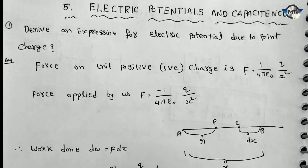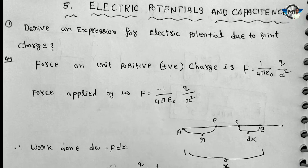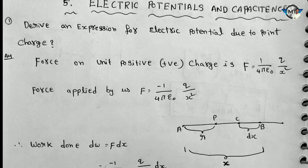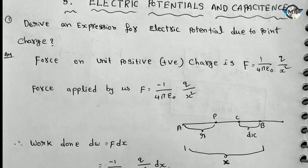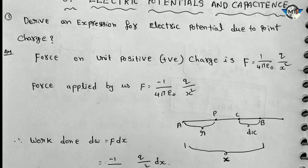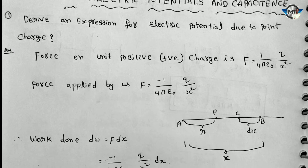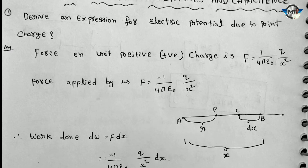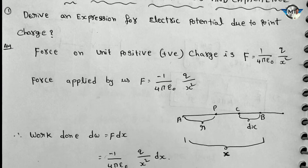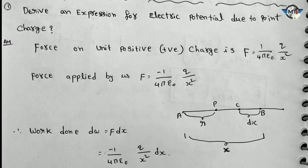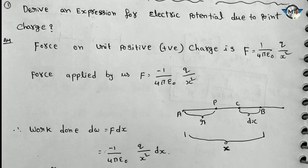In this chapter, my first question is: Derive an expression for electric potential due to a point charge. This is also a derivation part, so I will explain the derivation part.